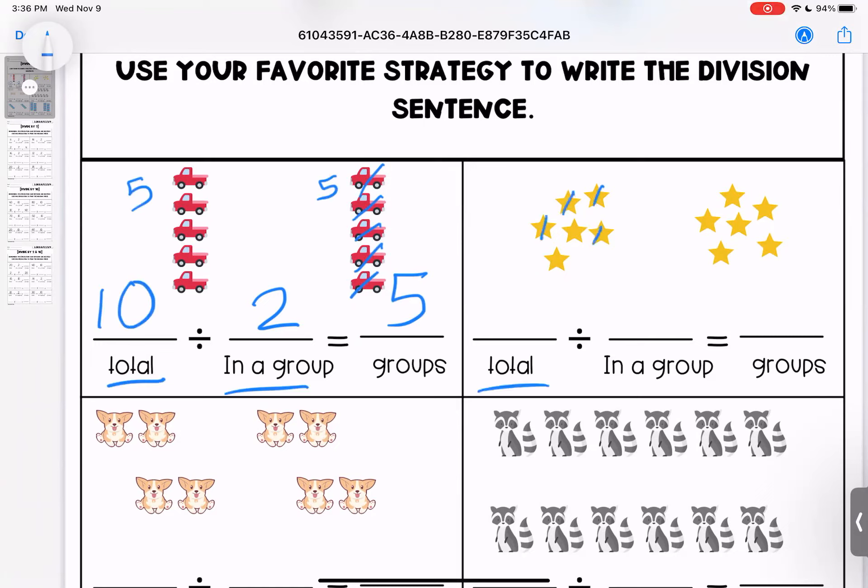I have one, two, three, four, five, six. Six in each. Six and six is twelve. Twelve, there are two groups. Each group has six. So twelve divided by two is six.